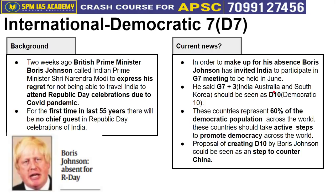A similar proposal was made last year by US President Donald Trump — to extend the G7 and include India. D10's full form according to Boris Johnson is Democratic 10. It is called so because these 10 countries, though small in number, account for 60% of the world's democratic population. The purpose is to bring the world's 10 most powerful democracies together under one grouping to promote democracy globally.